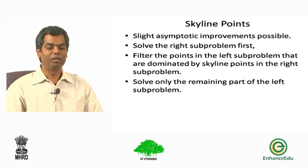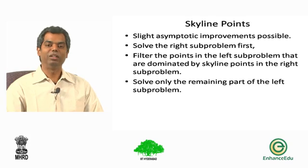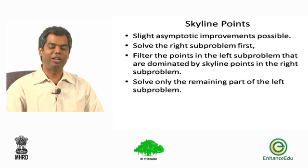From the right skyline to the left skyline, but you could as well solve the right sub-problem first. You know, when is a point in the left side of this median of x-values end up as a skyline for the overall thing?